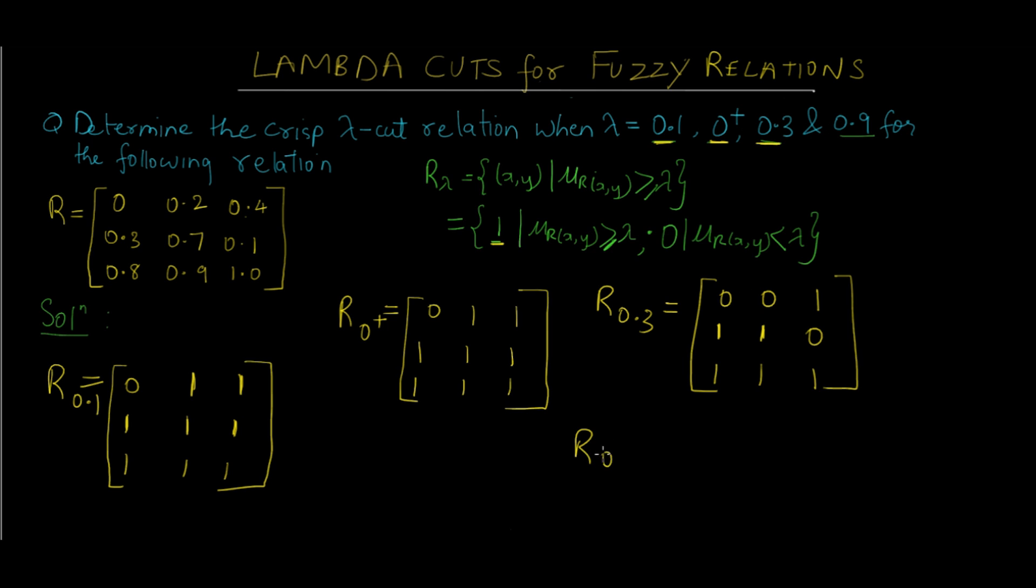Last we have R₀.₉. Since 0.9 is a very large value, you can see almost all of these are smaller. Only the last 2, that is 0.9 and 1.0, are equal and greater than 0.9. So only those values are going to be 1. The rest all are going to be 0. Let me just quickly replace them. There you go with all 4 different relations which are now converted to crisp relations by using the lambda cuts for fuzzy relation technique.